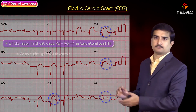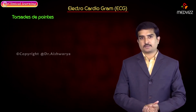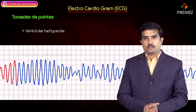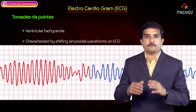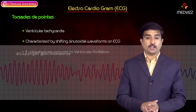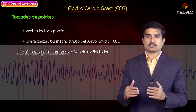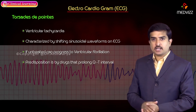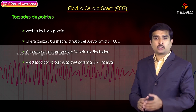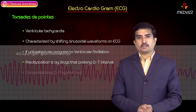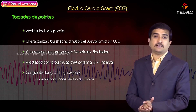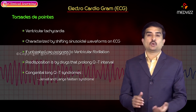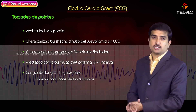Torsades de Pointes is a ventricular tachycardia characterized by shifting sinusoidal waveforms on ECG. If left untreated, it can progress to ventricular fibrillation, which is fatal. Drugs that prolong the QT interval can predispose to Torsades de Pointes. Congenital long QT syndromes such as Jervell and Lange-Nielsen syndrome, due to defects in sodium and potassium channels, can also cause this condition.